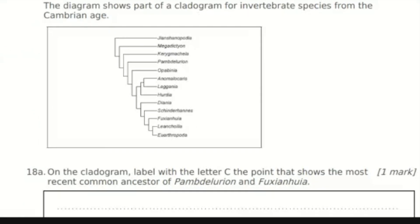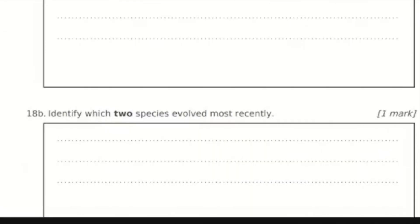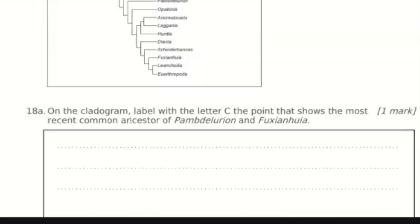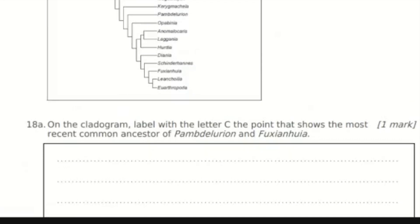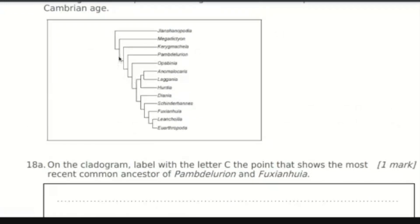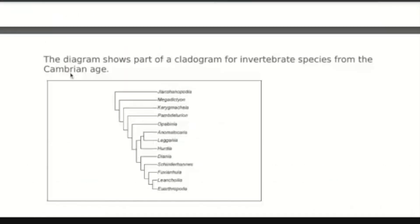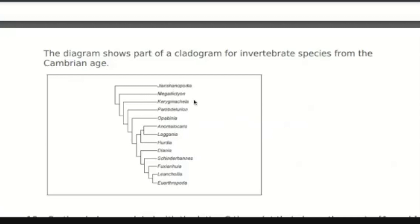It's just about reading your cladogram. For part C — identify which two species evolved most recently. In reading cladograms, we assume that where you have the most recent branch and the most branching, that is where the most evolution has occurred. The species that evolved furthest back is the one at the top beginning with J. The two that evolved most recently are the L one and the E one. You don't need to know when the Cambrian age was or what these organisms are — the more branching, the more recent the evolution.